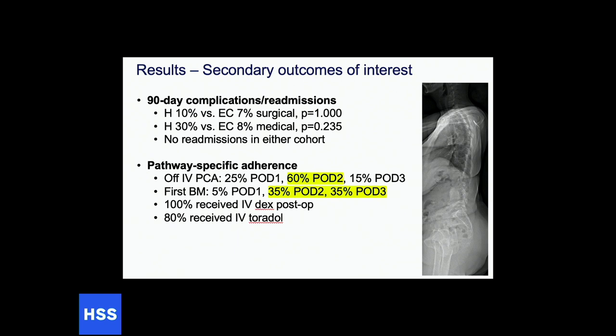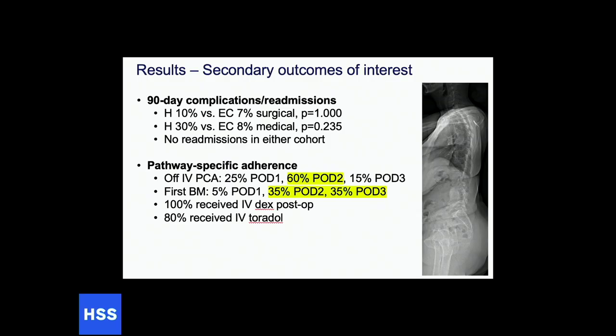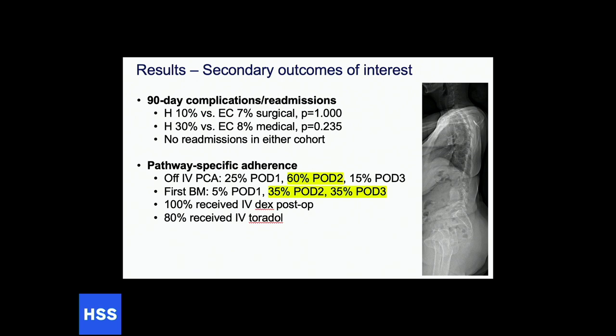Ninety-day complications and readmissions were not different between the historical and enhanced recovery cohorts. The majority of patients were off their PCA by post-op day two. Education around opiate usage has further improved this. IV dexamethasone is given around midnight of post-op day one into post-op day two, because patients feel great on post-op day one but have a ton of pain on day two, taking more medications, leading to ileus and delayed discharge. Changing pain protocols to prevent that spike — using IV decadron and standing Toradol — made a significant difference.